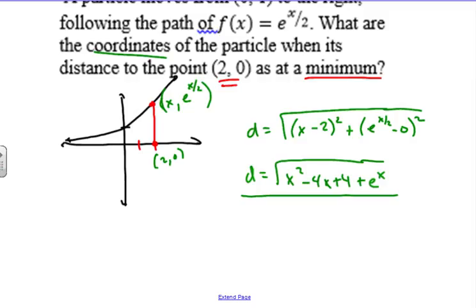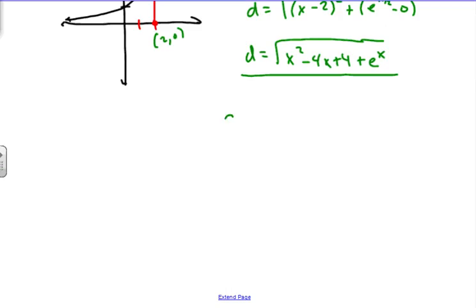What you can also do is you can take the derivative. Now one thing to make this derivative easier, is we're going to take this derivative, d prime, and actually if we square both sides, we have d^2 = x^2 - 4x + 4 + e^x.